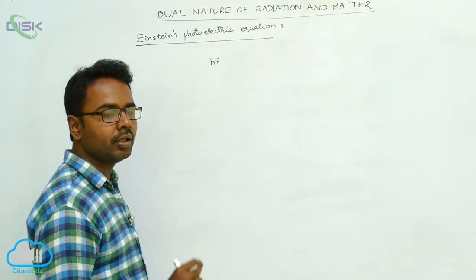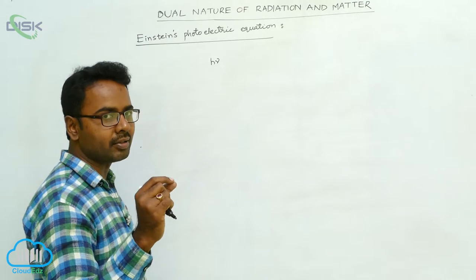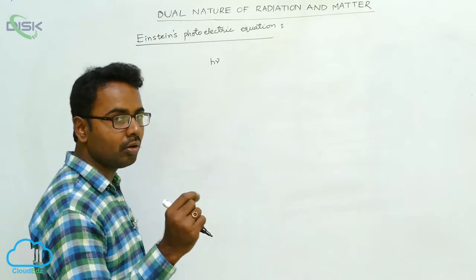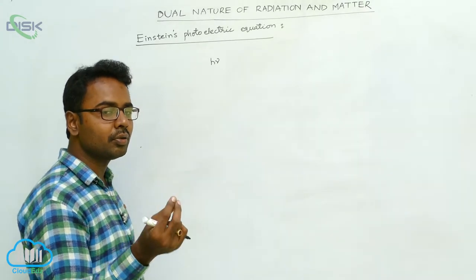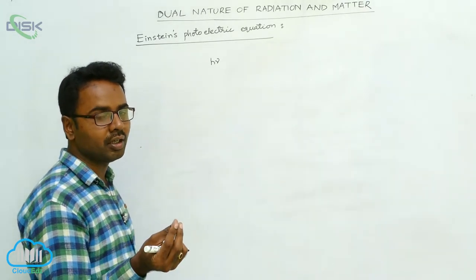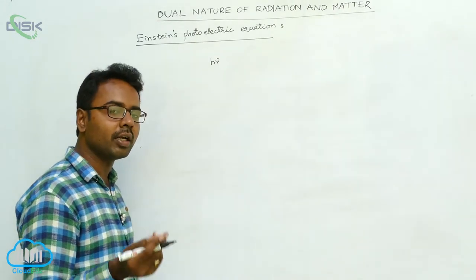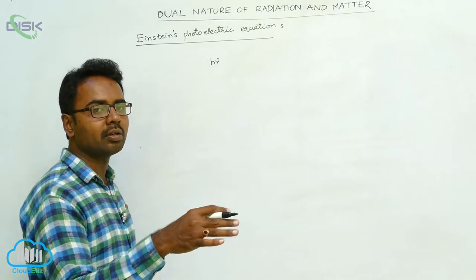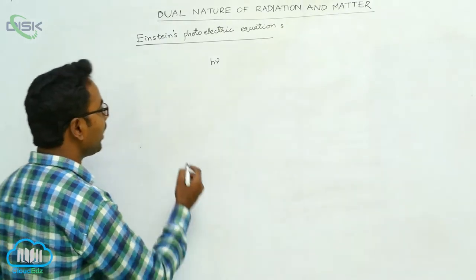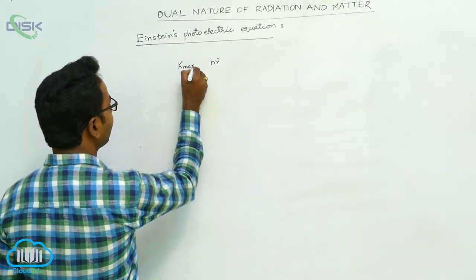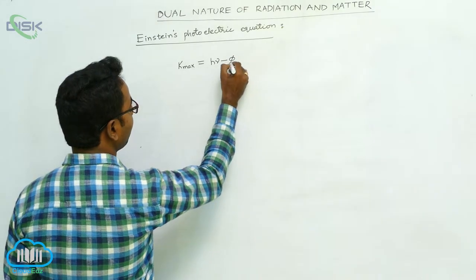Some part of the energy of the photon is utilized to detach the electron from the metal surface. This energy is called the work function — some part of the photon's energy is utilized as the work function. The remaining energy of the photon is imparted to the electron as its maximum kinetic energy. So we write that the maximum kinetic energy of an electron, K_max, is equal to hν minus φ₀.